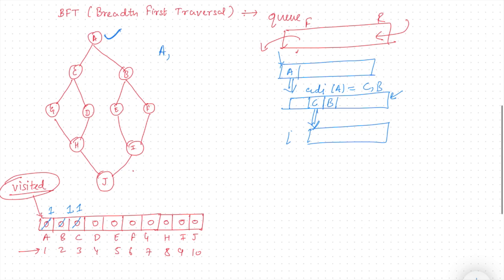Now I will pop out C and check the adjacent of C. The adjacent of C in the graph are G and D. I check whether G and D have been visited. G is not visited — mark it as one. D is also not visited — mark it as one. So G and D go inside the queue.